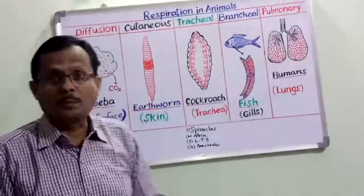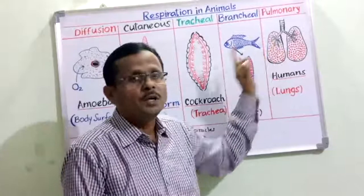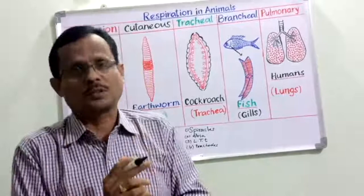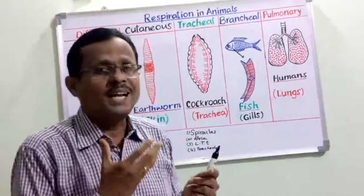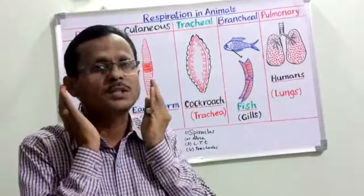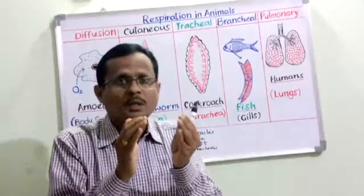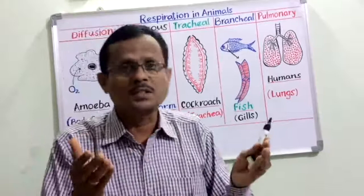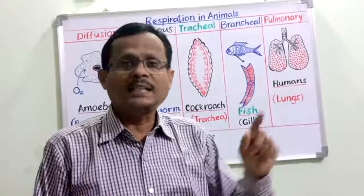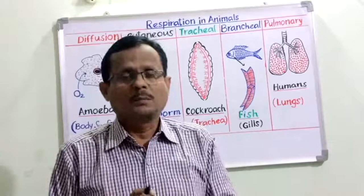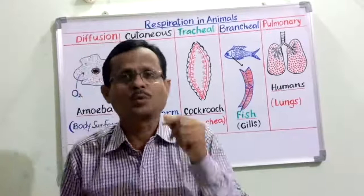In vertebrates, the branchial system and the pulmonary system are the two highly developed systems of respiration. In fish, gills are found bilaterally — on both sides towards the anterior end of the body in the head region. They are covered by an operculum in bony fishes. Fishes are categorized into two kinds: bony fishes or teleost fishes, and elasmobranchs or cartilaginous fishes such as sharks. An example of a bony fish is Labeo rohita or Catla catla.